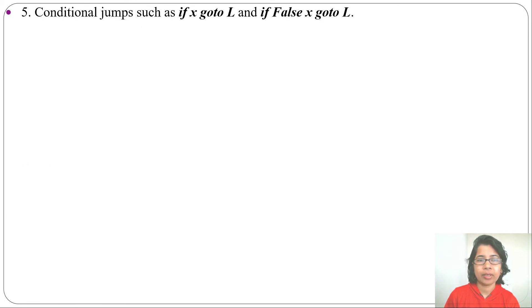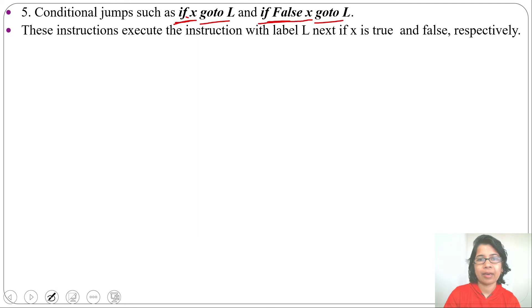Next, conditional jump. Unconditional jump means just goto L. Conditional jump means some condition: if it is true then it will go to that label. So if x means if x is true, goto L. Then if false x: if x is false then goto L. So it will go to label L according to true or false respectively.